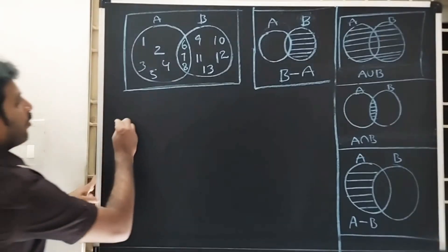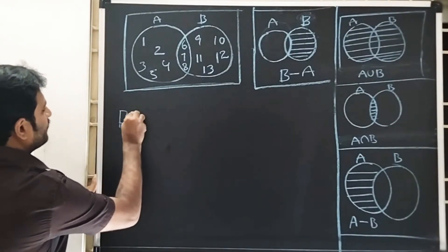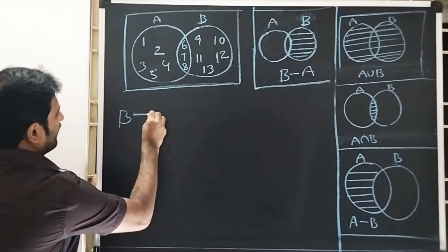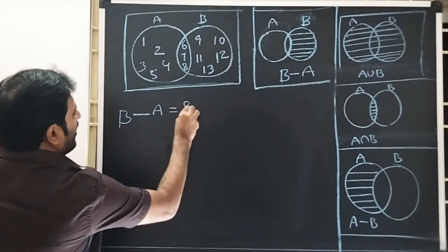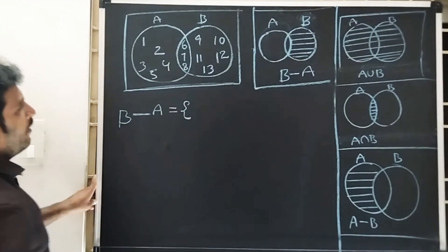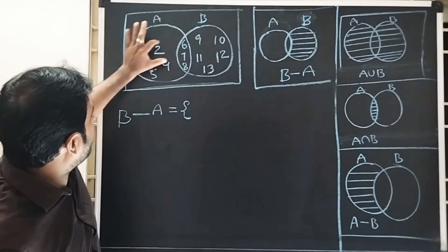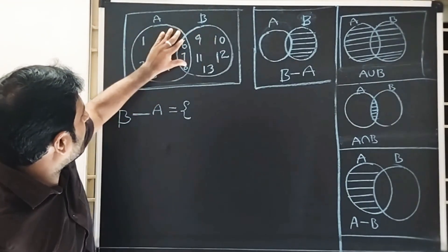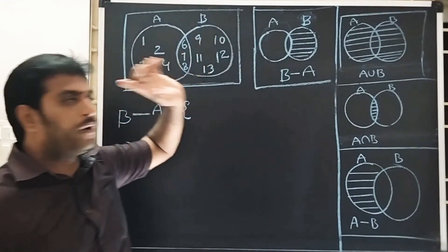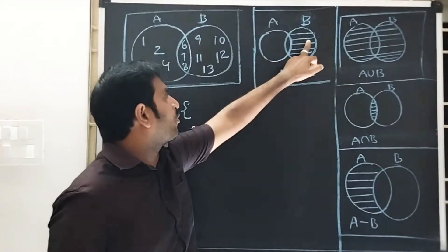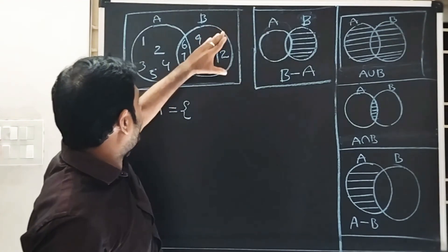The example is B minus A. B minus A is the B-only remaining part. A complement intersect B complement is the common part. And if we find the B minus A shaded part, those are the shaded elements.